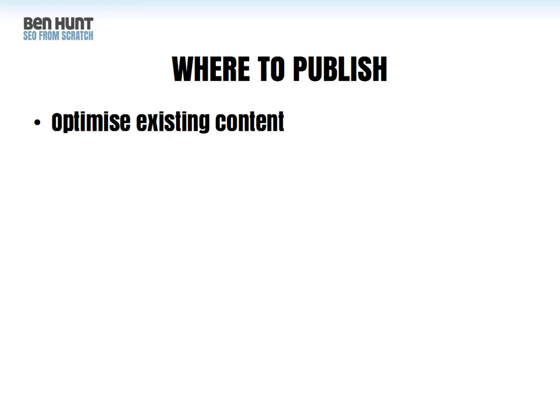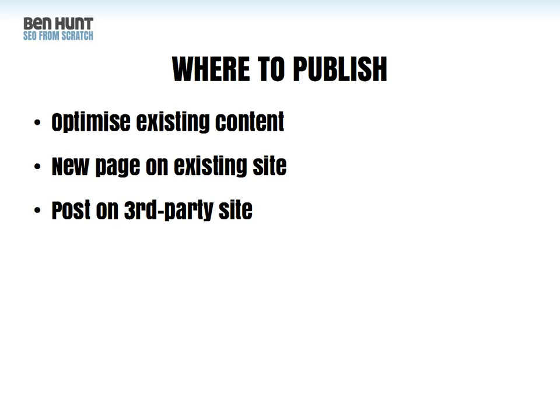Now we'll look at where to publish. We've really got four main choices, and I'll tell you each in increasing order of the amount of work likely to be involved. The easiest option is to optimize existing content. Next, we've got the option to create a new page on your existing website. You should also consider posting content on other people's websites — we'll go through the pros and cons in a moment. And finally, you could take the option to create a brand new domain, either a whole new website or just a microsite.